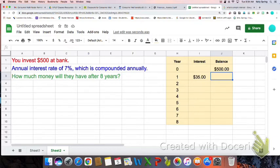I'm going to take my previous balance, which is always going to be right above it, and I'm going to add my interest for that year, which is always going to be directly to the left. There you go.